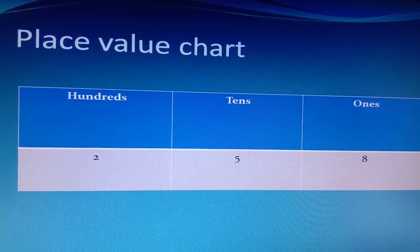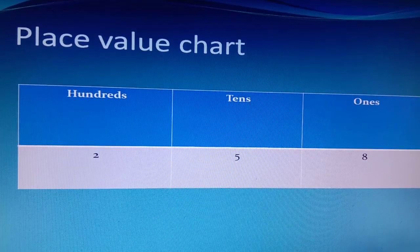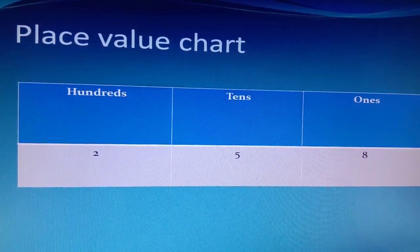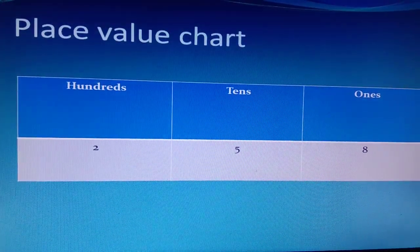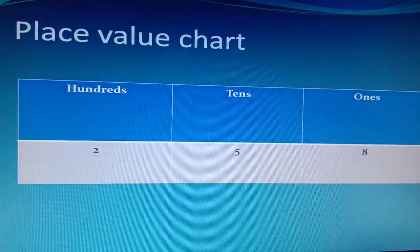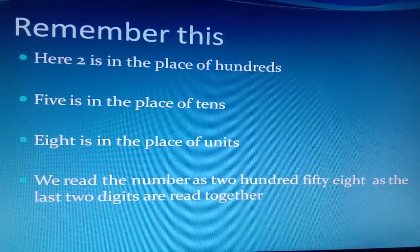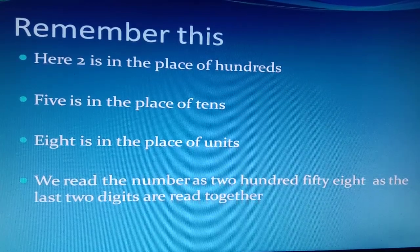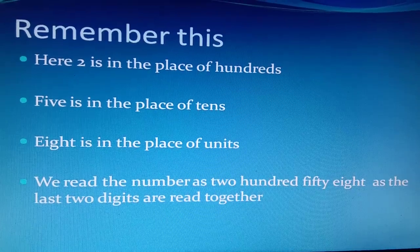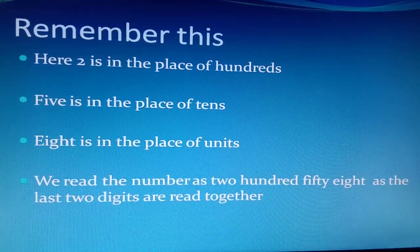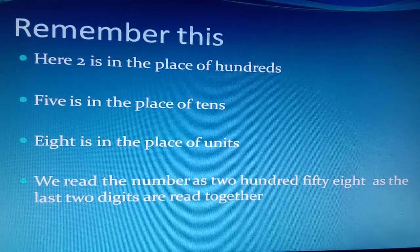Now you can see the place value chart, which has three columns: hundreds, tens, and ones. The number shown is 258. Remember this — 2 is in the place of hundreds, 5 is in the place of tens, and 8 is in the place of units. We read the number as 258, as the last two digits are read together.